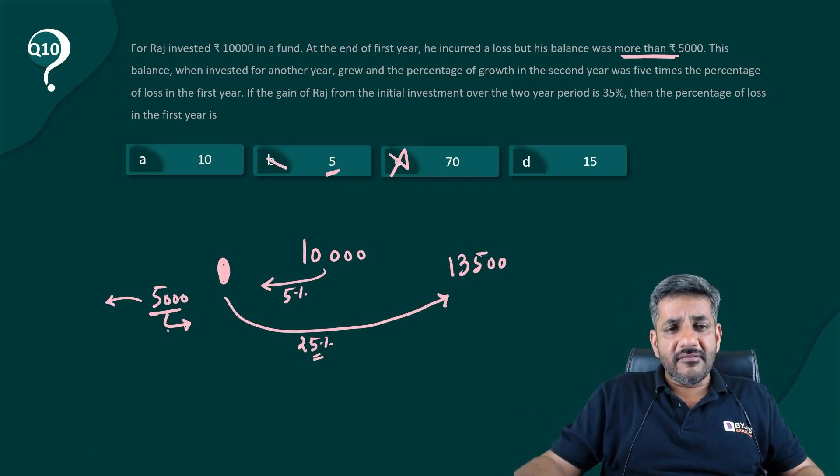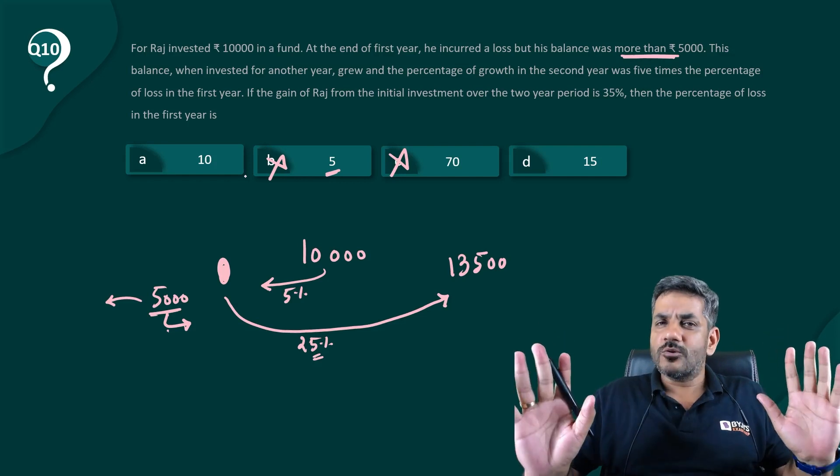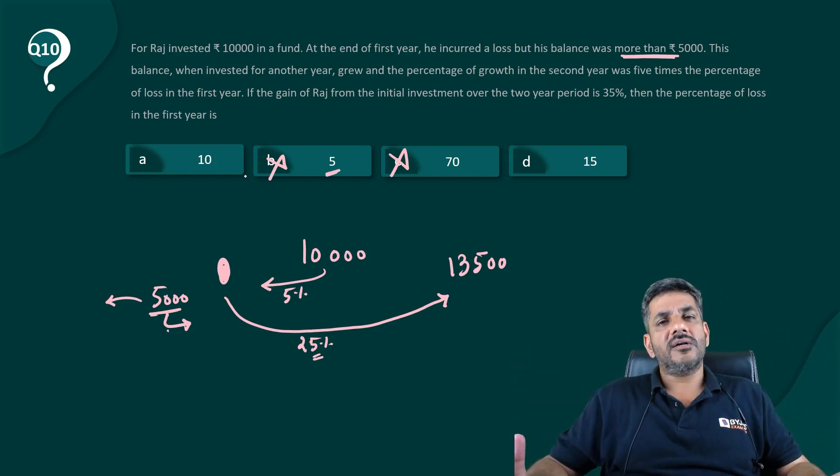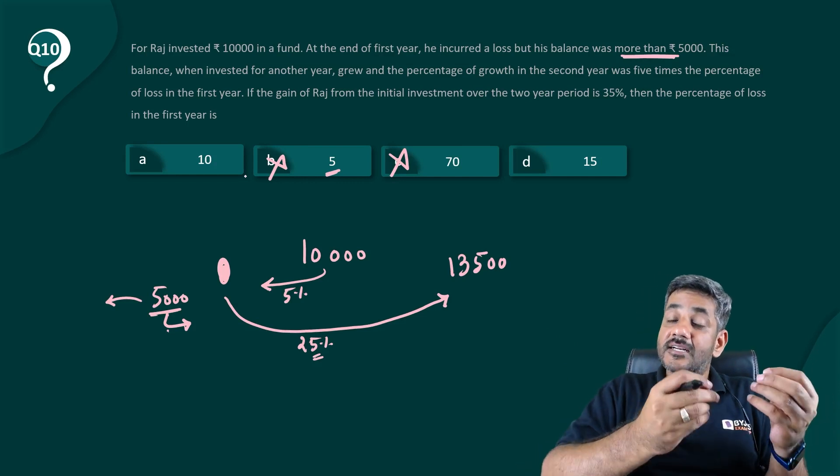So how can a number below 10,000 increased by 25% become 13,500? So even 5 is not my answer. We are able to eliminate two options very easily.